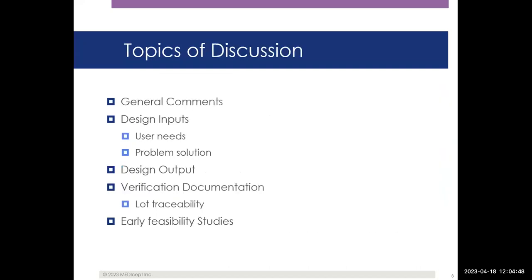Some of the topics we're going to hit: we'll start with general comments about design control and feasibility. Then we'll talk about design inputs — user needs and how to really solve a problem that exists. One issue we often find is that companies come up with a solution and look for a problem to solve. What we usually say is let's look at the problem first, then see how we can use the solution. We'll cover design outputs, verification documentation — that's early stage prototype testing and review — including some level of lot traceability. And lastly, we'll talk about early feasibility studies.